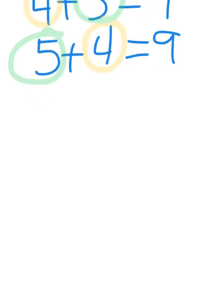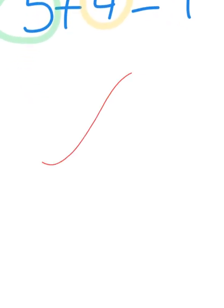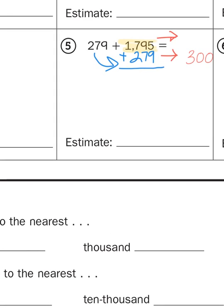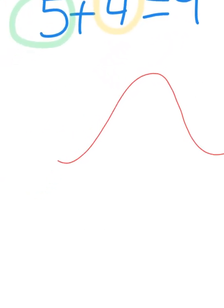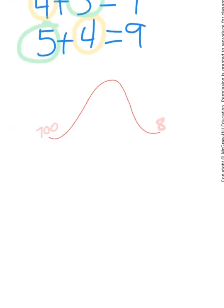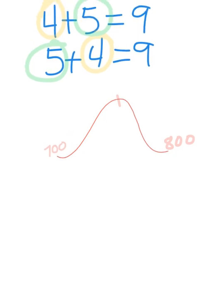What I need to do is think about that rollercoaster model and thinking about hundreds. So if I ignore, just for a moment, that there's a 1 in front of this number, and just think about 795. If I round 795 to the nearest hundred, it would fall somewhere between 700 and 800, with the halfway point being 750.